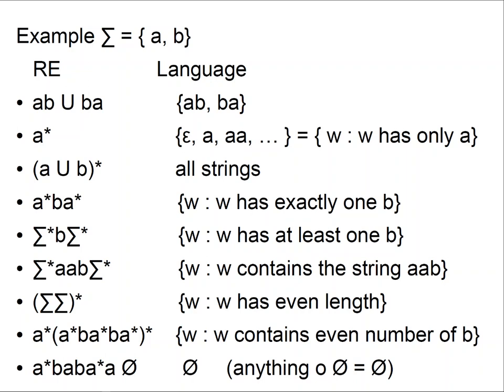The last one is a trick question — it's the empty set, because anything concatenated with the empty set is the empty set. As you can see, you can write down things which are pretty complicated — like having exactly one b, having at least one b, even length — with a pretty compact expression. This is some indication that regular expressions will be a good way to write down regular languages.